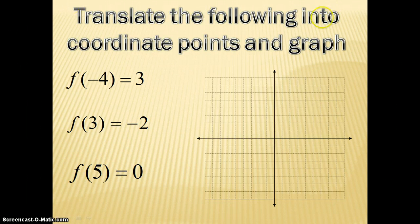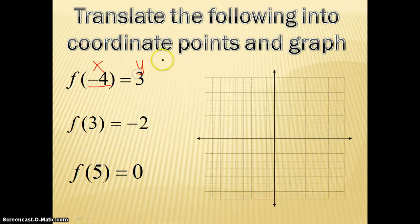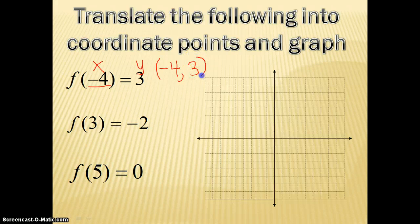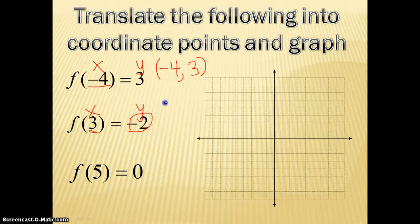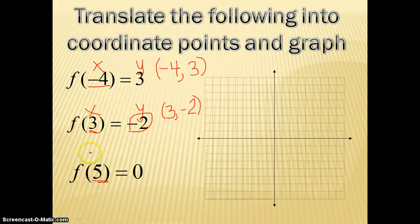We've got another problem. It says: translate the following into coordinate points and graph. Remember, whatever is in parentheses is your x value, and whatever it equals is going to be your y value — because f of x and y are the same thing. So in this case, my x is negative 4 and my y is 3. For the next one, x is 3 and y is negative 2. And the last one, x is 5 and y is 0.